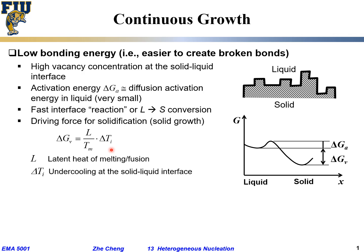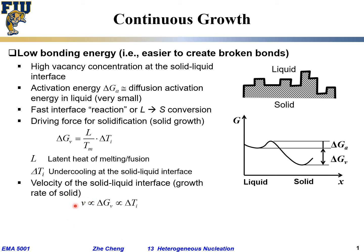L is the latent heat, and ΔT is the undercooling right at the interface. The velocity — how fast does solid grow, how fast does the interface move — is proportional to your driving force, and the proportionality constant is your mobility. Velocity is proportional to delta Gv, and therefore proportional to undercooling, because driving force is proportional to undercooling.